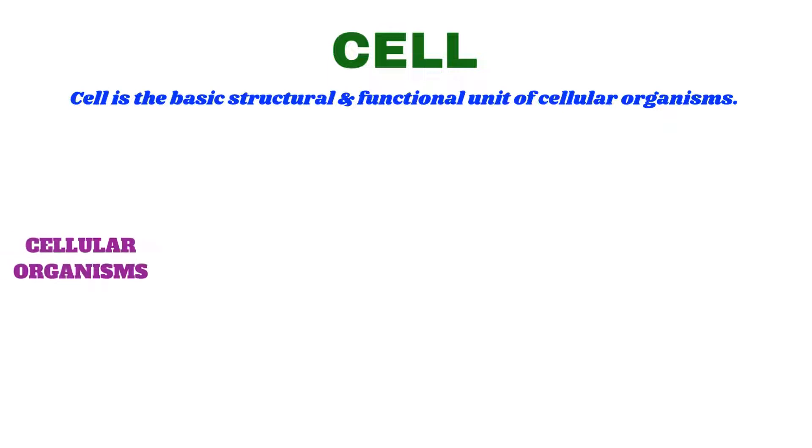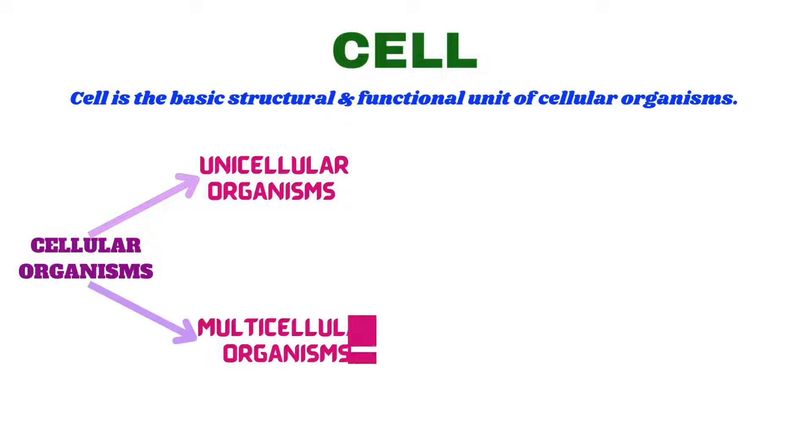Now, what are cellular organisms? The organisms which are made up of cells are called cellular organisms. Now, the cellular organism can be unicellular or multicellular. Unicellular are those which are made up of one cell and they are simple organisms and perform all functions in just a single cell. These are the properties of a unicellular organism.